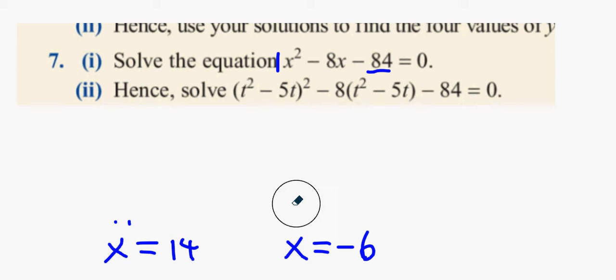imagine instead of having x's, we didn't have x, but we just had a blank spot instead. So that's blank spot squared. Blank spot squared minus 8 times blank spot minus 84 equal to 0.